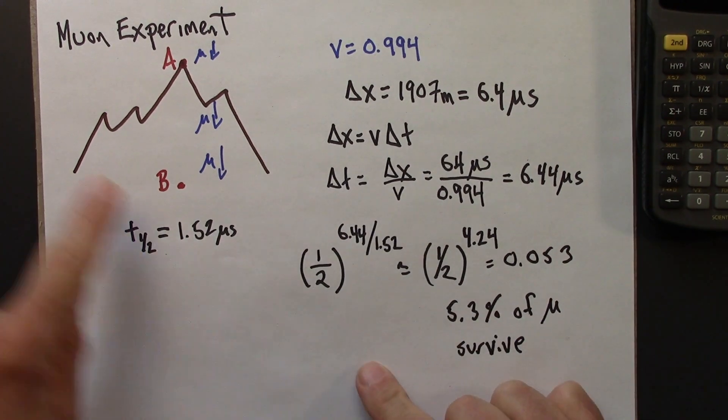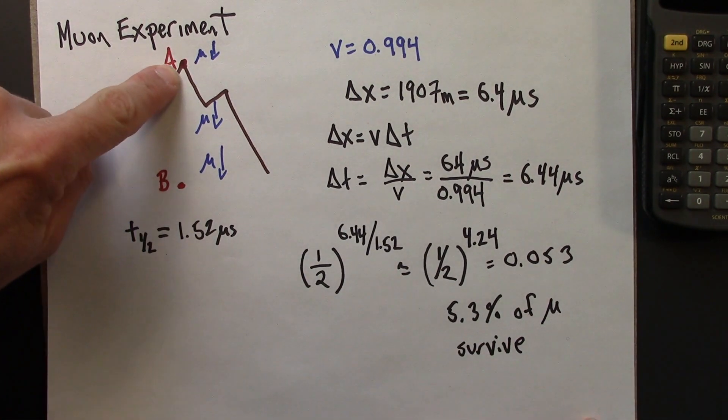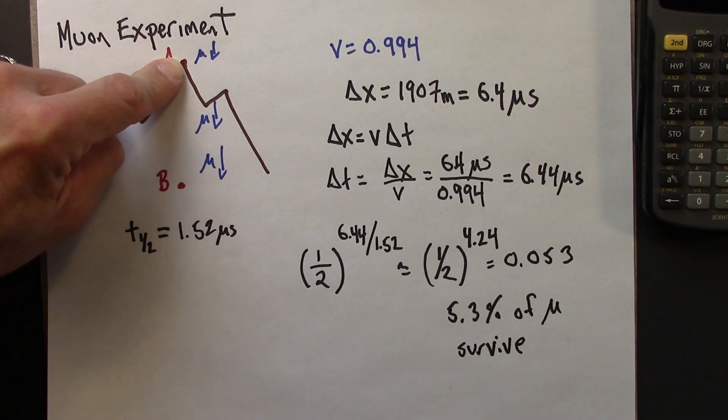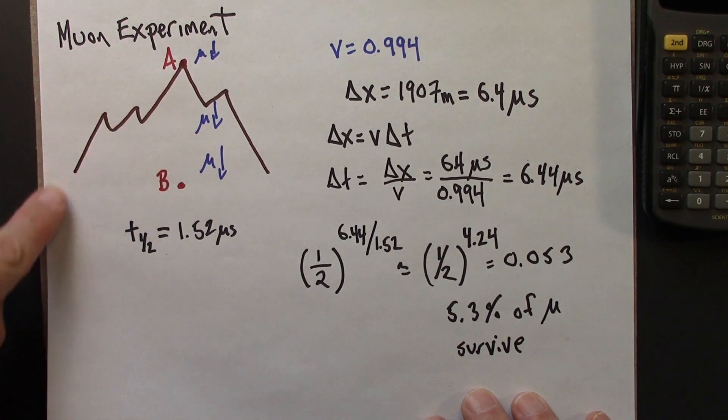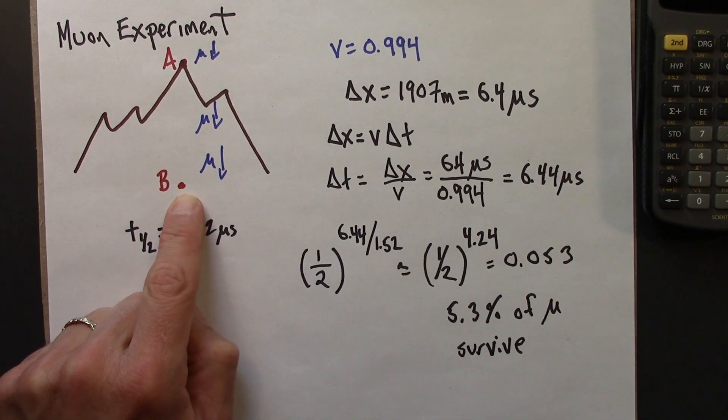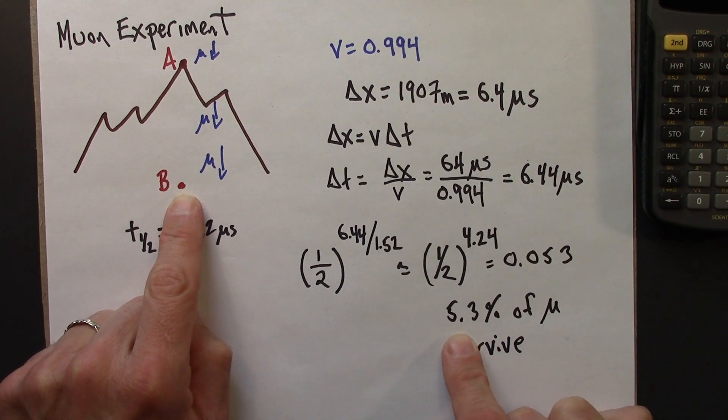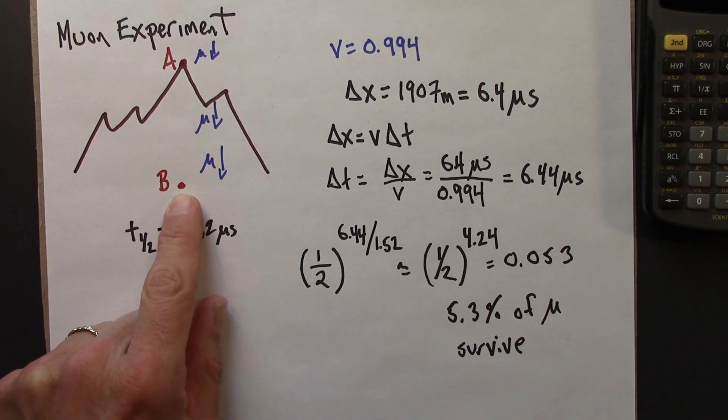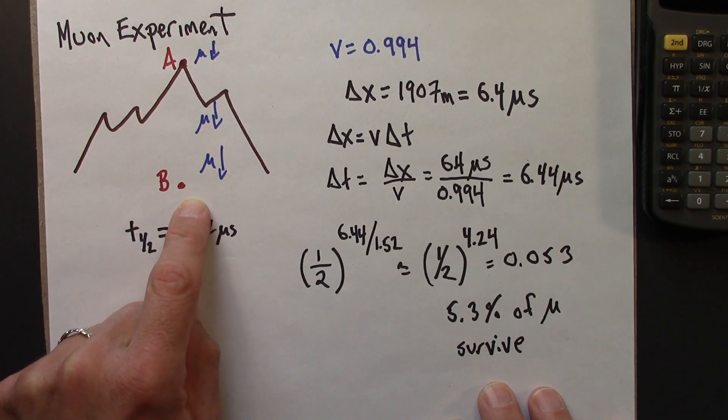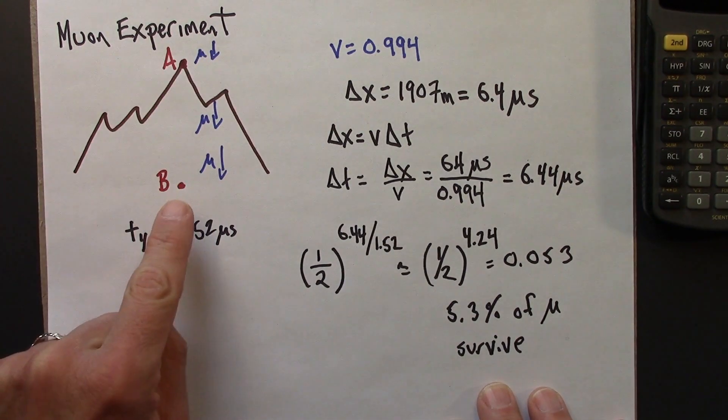So we could do this experiment. Hike up to the top of the mountain, see how many muons are passing us per hour or per day, then go down and do the same experiment at sea level. We would expect to see only 5.3% as many muons, because most of these muons don't survive this journey. That's the point of view from us on the Earth.